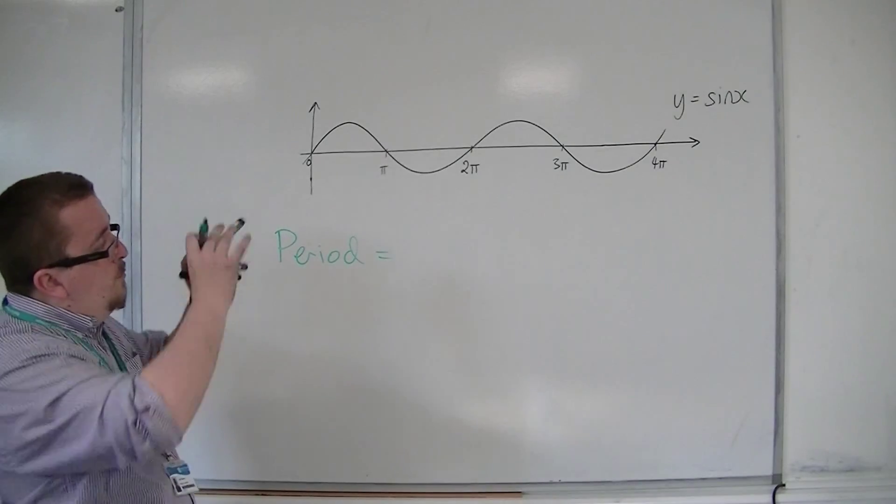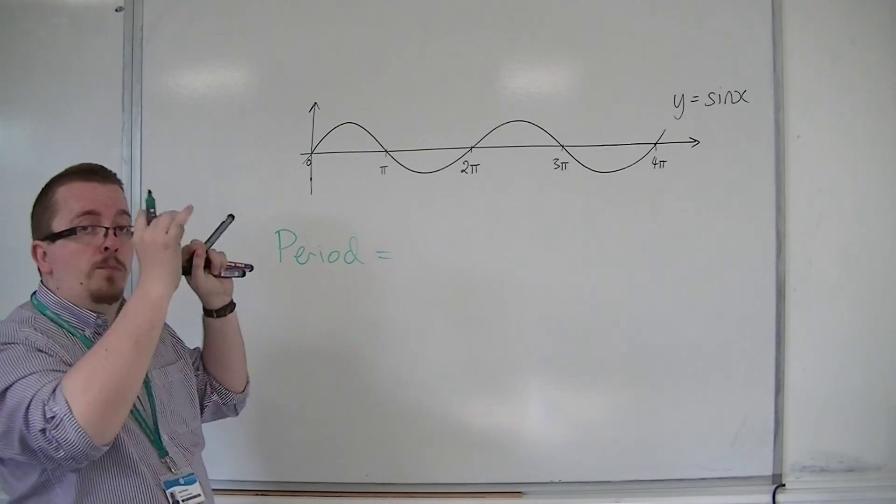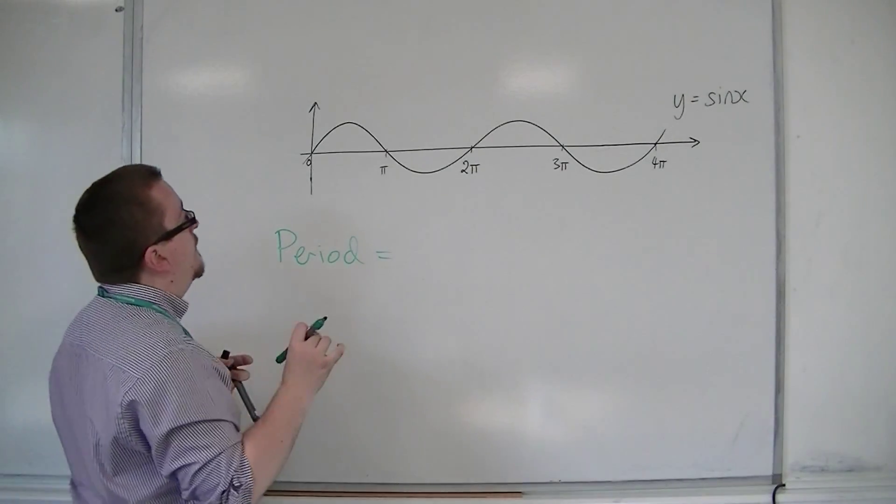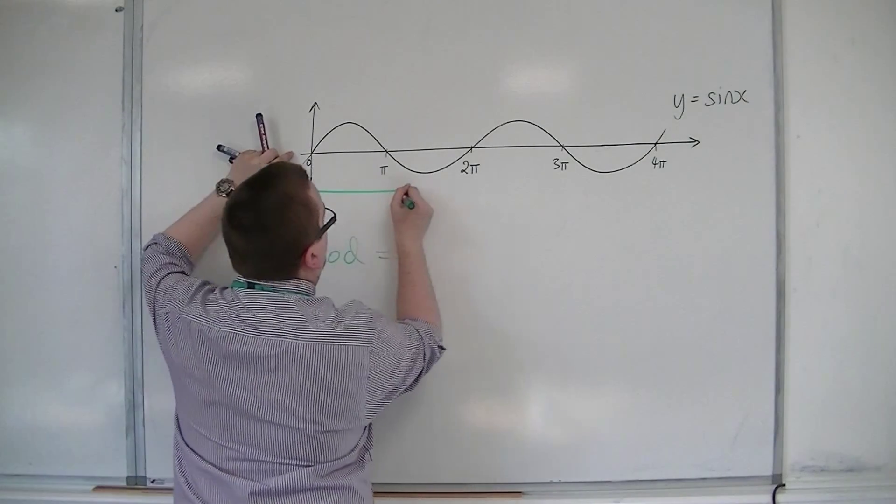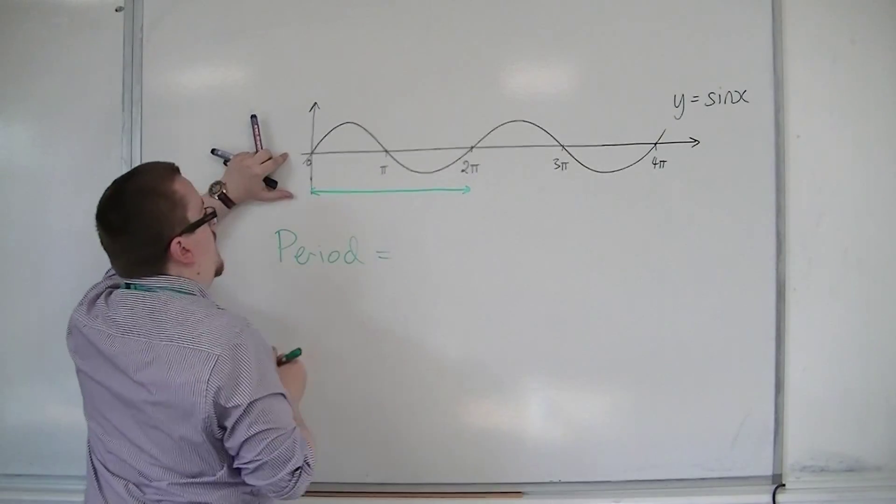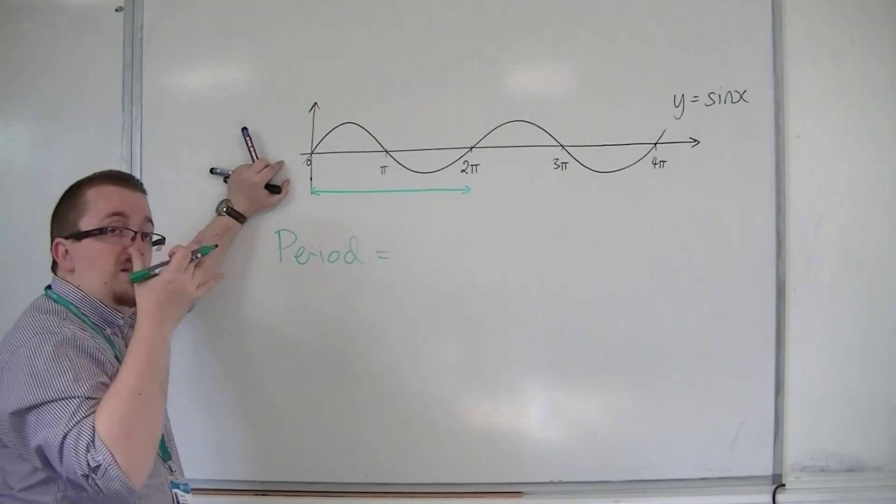Which portion of the curve is repeating itself over and over again? You can see it as between 0 and 2π. That would be what we consider to be the period.